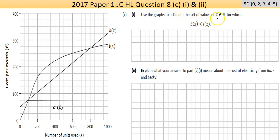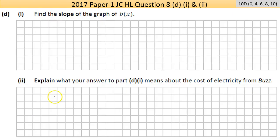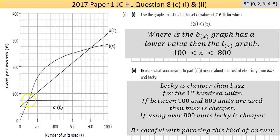Part C here, C1 and C2 are marked together, 5 marks here. Use the graphs to estimate the set of values of x as an element of R for which B(x) is less than L(x). So that x is going to go in to cover their proverbials just for mathematic reasons.